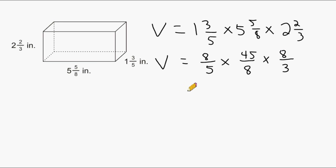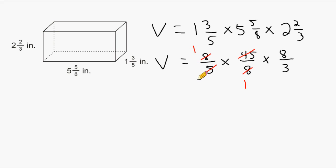Next, we check for any cancellation. We have an eight here and an eight here, and we can change both of those into the number one. And we can cancel out the five and the forty-five — they share a common factor of five. Five divides into itself once, and we can get nine groups of five into forty-five. And now we can cancel out the nine and the three: three divides into itself once, and three divides into nine three times.